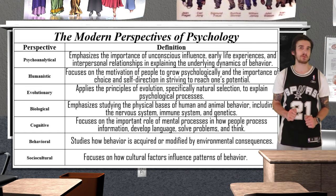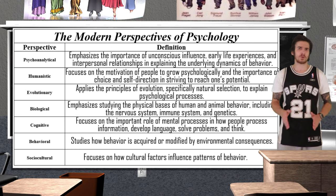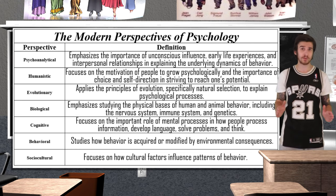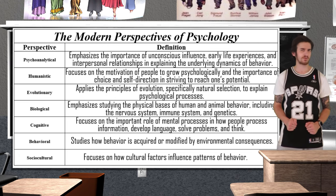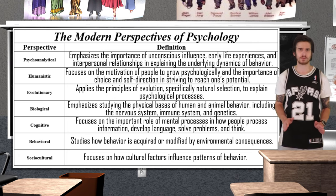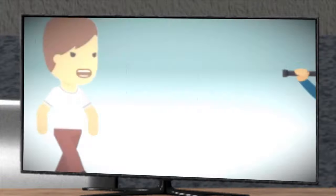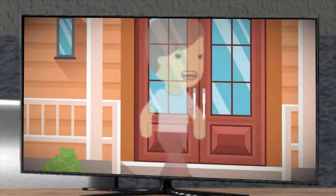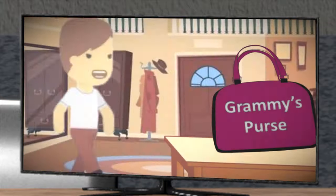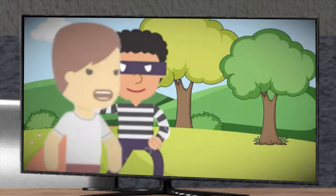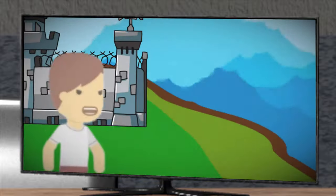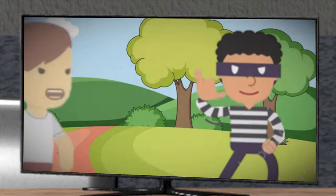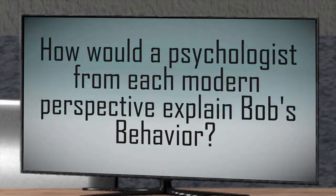So that does it for our modern perspectives. I know that was kind of quick, so if you feel like you're not ready for round two where I'm going to quiz you a little bit, you might want to go back and do a little extra research. Now let's get into our story. Bob is a 16 year old who has been in trouble with the law repeatedly. He has broken into houses with his friends and stolen from loved ones to obtain money for drugs. He has previously been given probation, house arrest, and even time in juvie. Every time one sentence is lifted, Bob reverts back to his life of crime. How exactly would a psychologist from each modern perspective explain Bob's behavior?